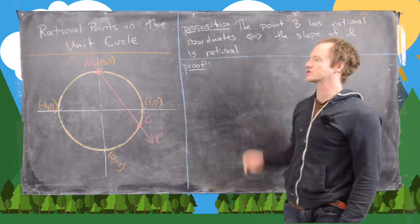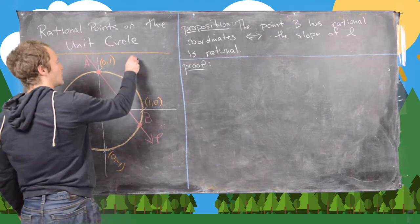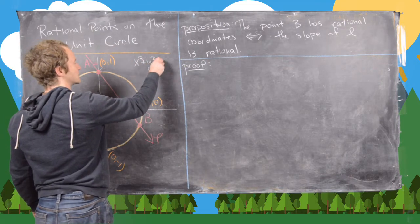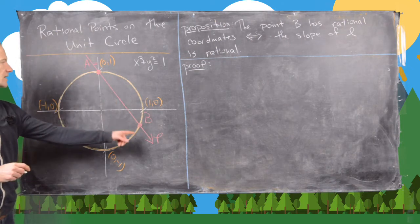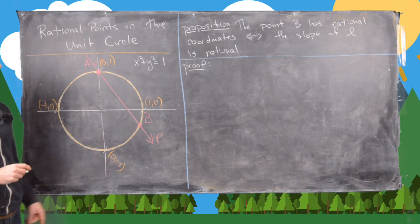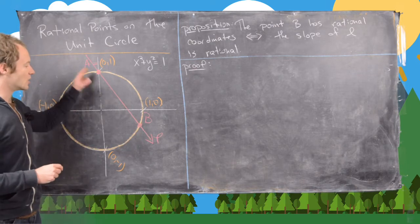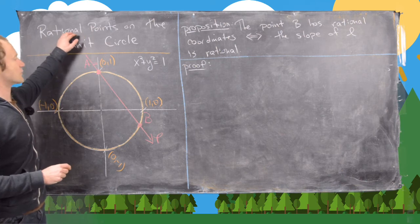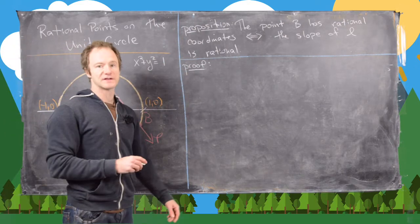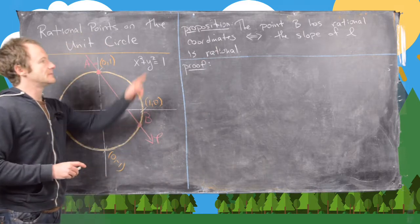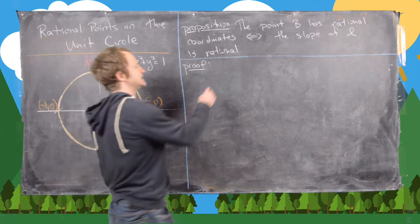In this video we're going to look at the rational points on the unit circle. We have the unit circle described by x squared plus y squared equals 1, drawn in yellow. I've also drawn a line starting at the north pole of the circle, point A = (0,1), intersecting again at B. We'll show the characterization of rational points is given by the slope of this line — specifically, point B has rational coordinates if and only if the slope of L is rational.